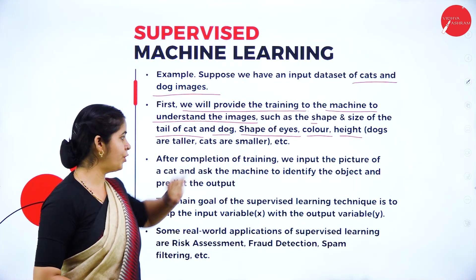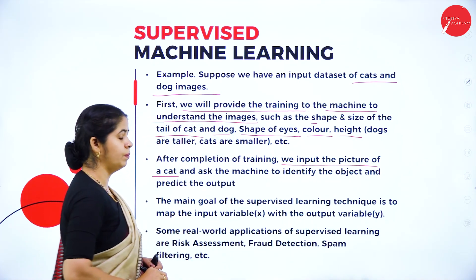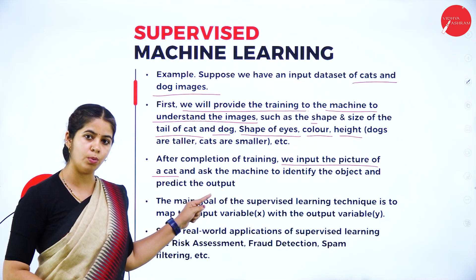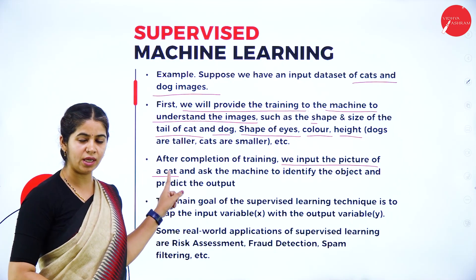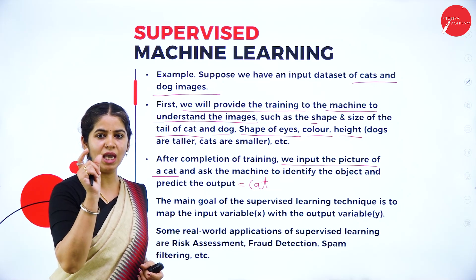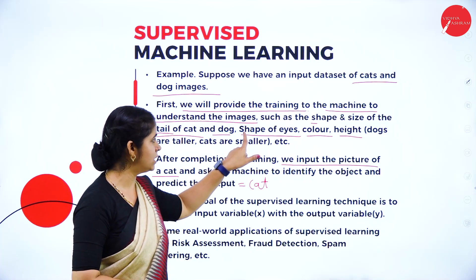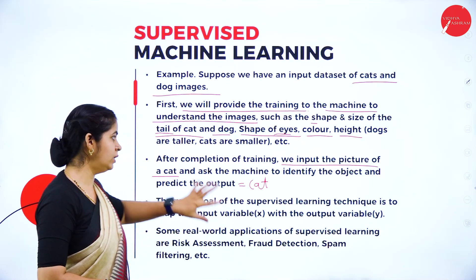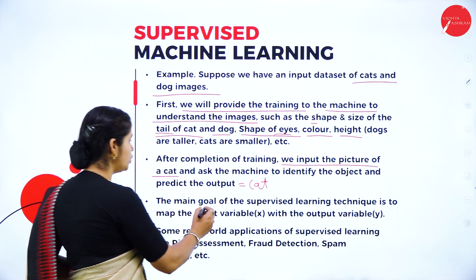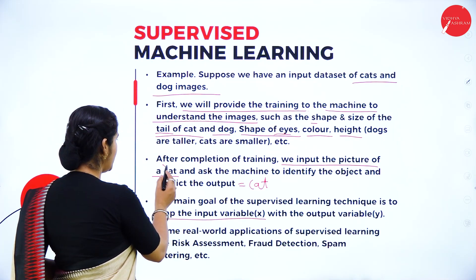After completing the training, we input the picture of a cat and ask the machine to identify the object and predict the output. Once we give the cat picture as input, the output should detect that the given image is a cat image — depending on its tail, its eyes, the color, or the height. The main goal of supervised machine learning is to map the input variable X with the output variable Y.